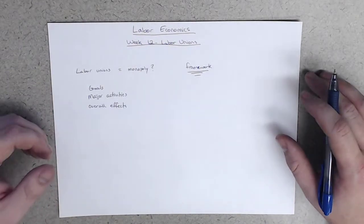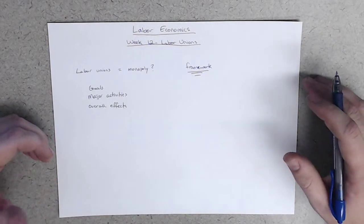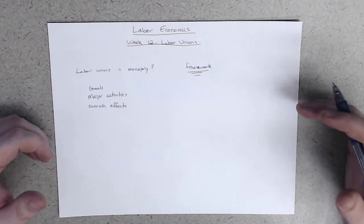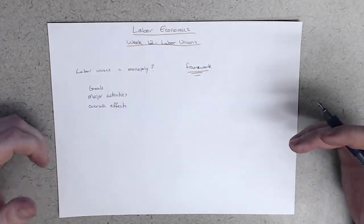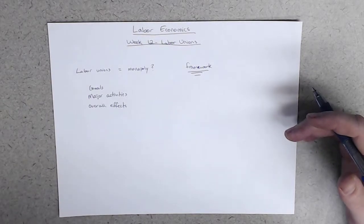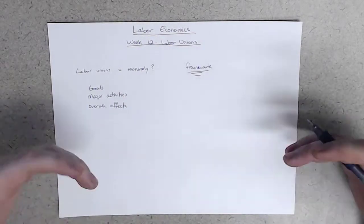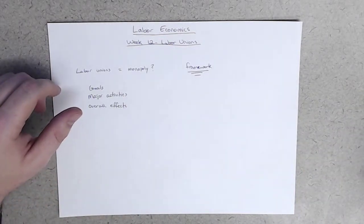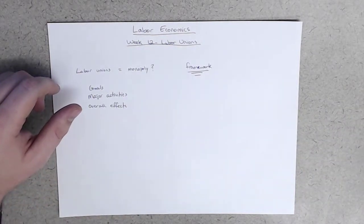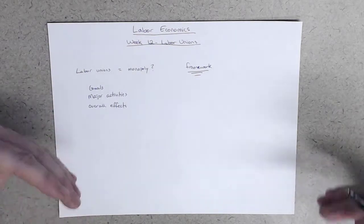So, I'll begin by providing some brief descriptive material on unions, both domestic and internationally, and then move to a more fundamental theoretical question. What are the economic forces on the demand side of the market that constrain unions in their desire to improve the welfare of their members?